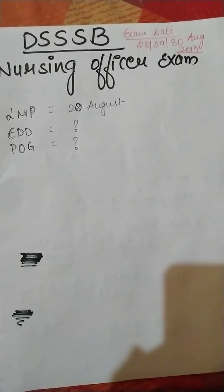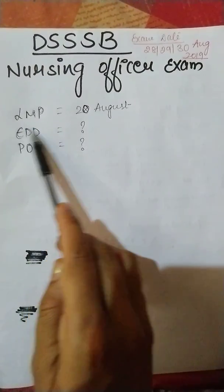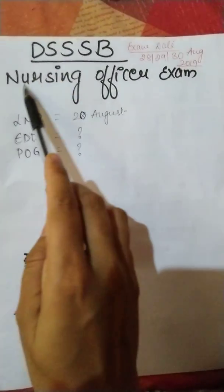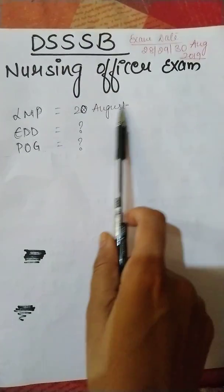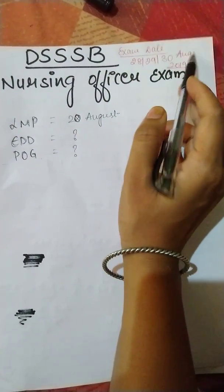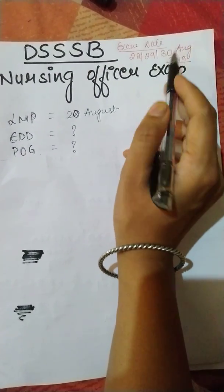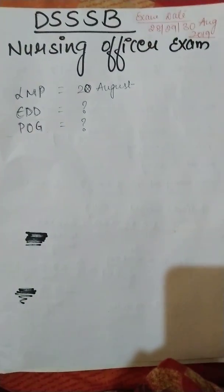So today I'm going to tell you a very simple thing, which is how to calculate LMP, EDD, and POG that is being asked in DSSSB nursing officer exam. And as you all know that the exam date is very near, that is 28, 29, and 30 August of 2019.